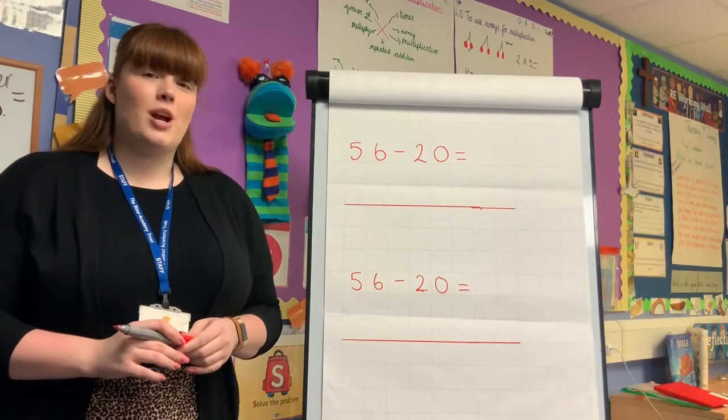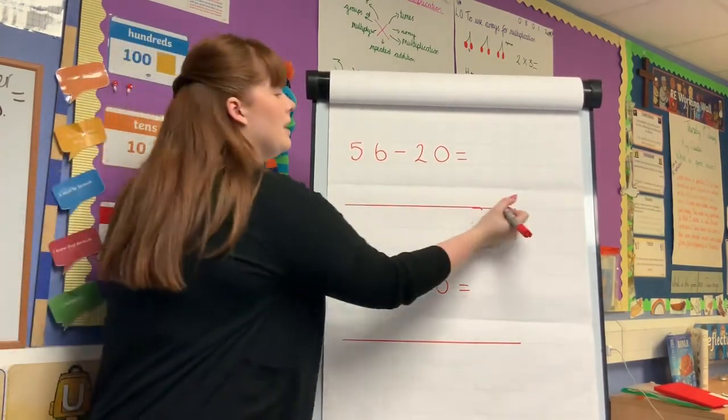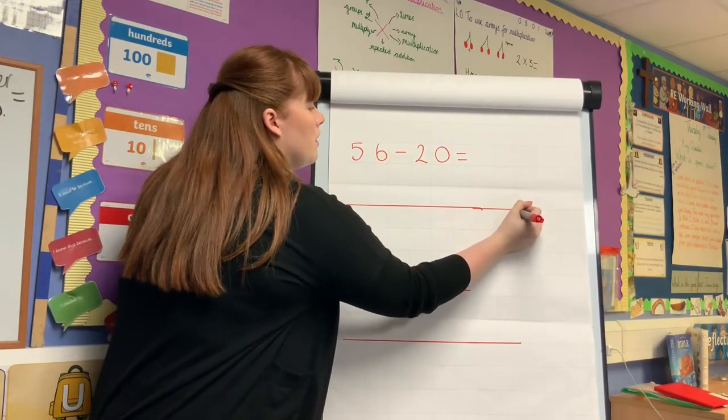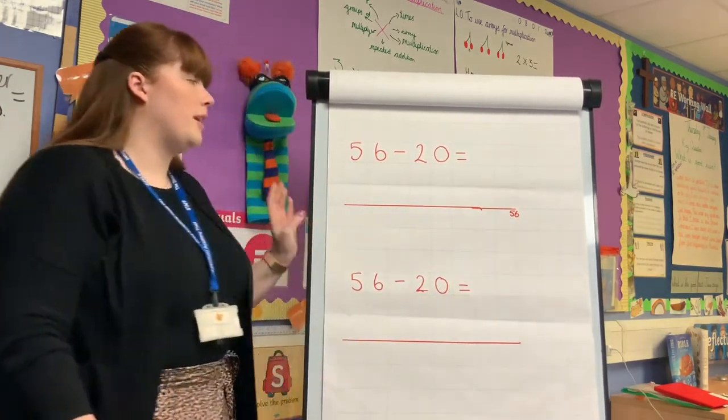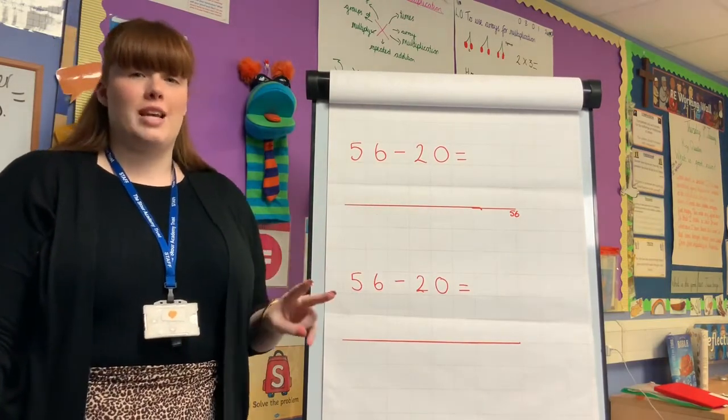We are now going to look at subtracting using a number line. I start by drawing my line and I put the number fifty-six at the end. I am going to be looking at fifty-six subtract twenty. To start with the children will make two jumps of ten.